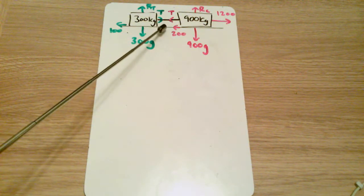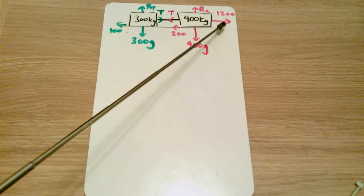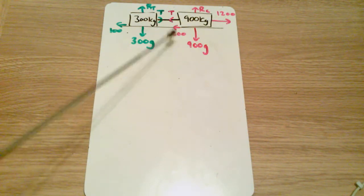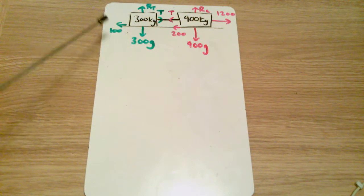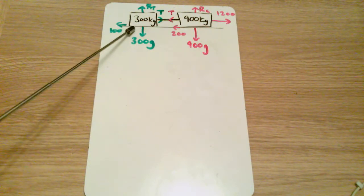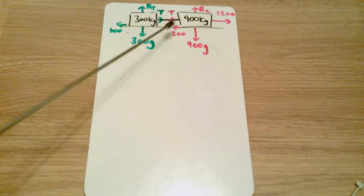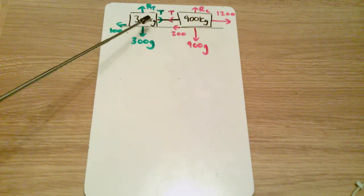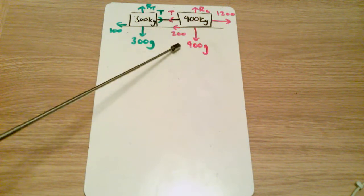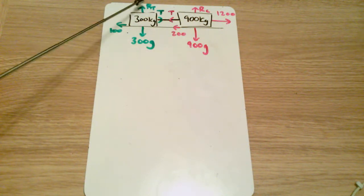The car is producing a driving force of 1200 newtons and there is resistance to motion of 200 and 100 newtons on each of the two vehicles. Now the car has weight of 900g, the trailer has weight of 300g, and because they're on a road which is flat there is a reaction force here for the car which is equivalent to 900g and the reaction of the trailer is also equivalent to 300g.